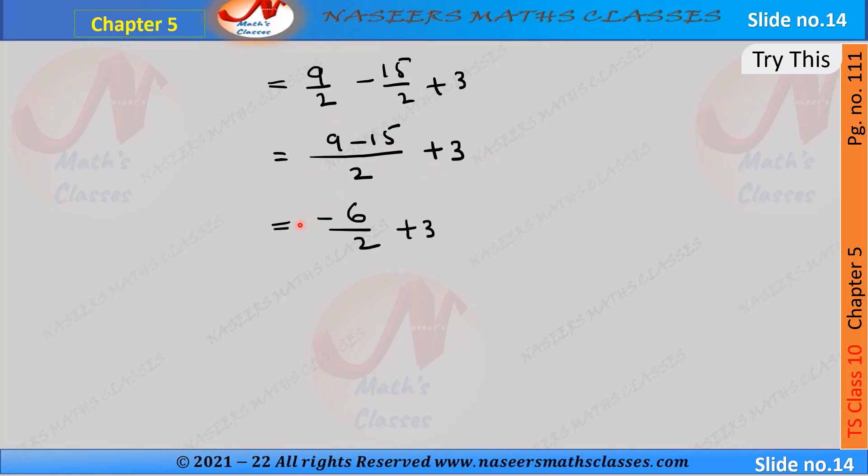Here 9 - 15 means -6, so it can be written as -6/2 + 3. Now we can cancel denominator numerator in two table, 2 ones are 2, 2 threes are 6, then we get -3 + 3.